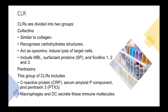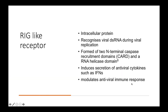Now let's learn about CLRs. CLRs are divided into two groups: collectins and pentraxins. Collectins are similar to collagen and they can recognize carbohydrate structures on a target pathogen or altered cell molecule. They can act as opsonins and induce lysis of target cells. They include MBL, which we already talked about, and surfactant proteins mainly secreted in lungs, and ficolin-1, 2, and 3. The pentraxin group includes C-reactive protein, serum amyloid P-components, and pentraxin-3 or PTX3. Macrophages and dendritic cells mainly secrete these immune molecules.